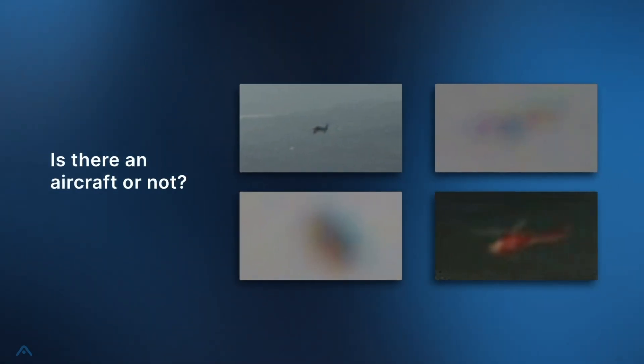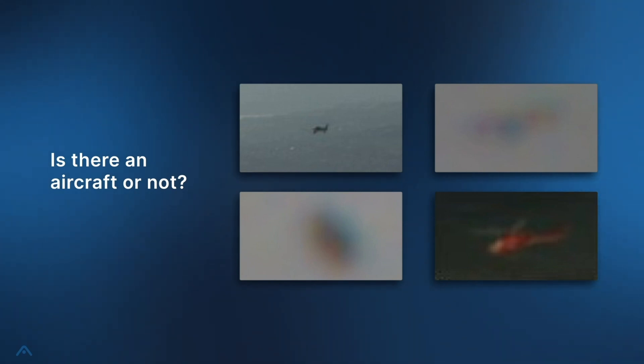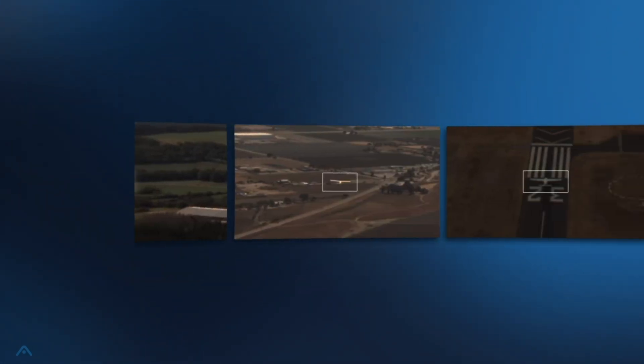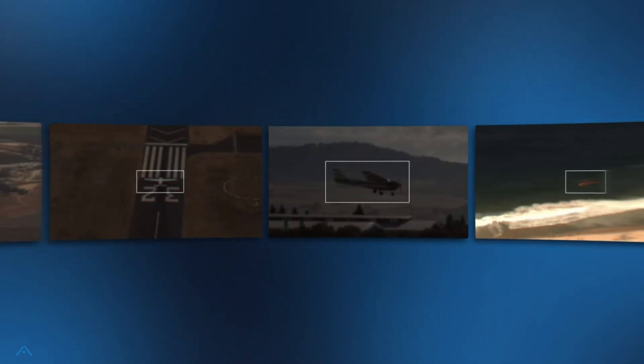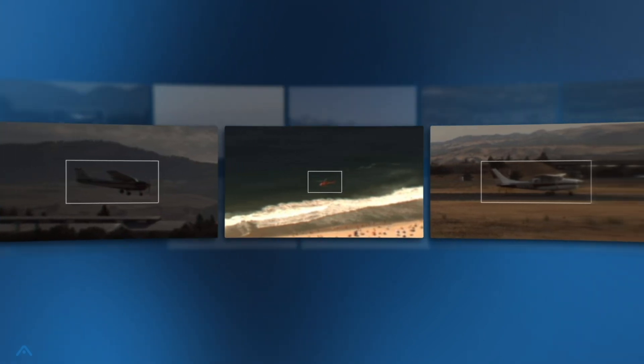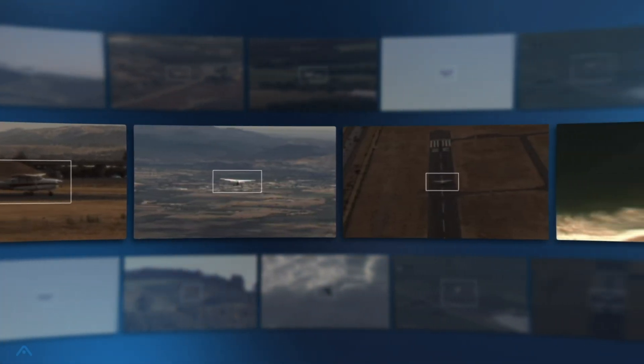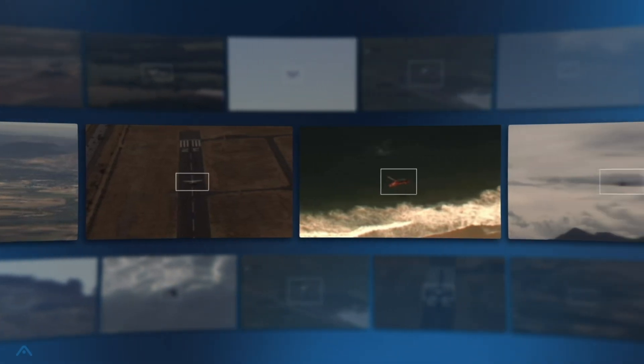For example, one component of Daedalean's visual traffic detection is a neural network that decides if an image contains an aircraft or not. We trained it by giving it millions of images labeled by humans. This is called a training data set. The job of the neural network was to extract statistical patterns.